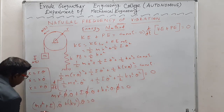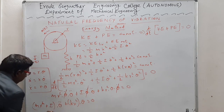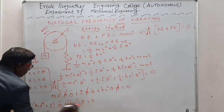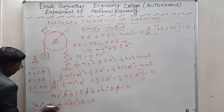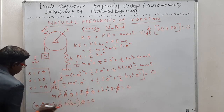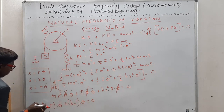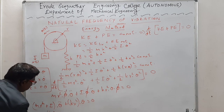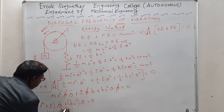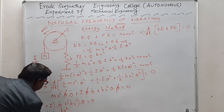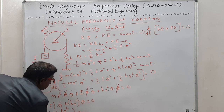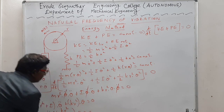This equation can be rewritten by dividing through by the coefficient of θ̈. The whole equation is divided by (mr² + I), so the first term becomes simply θ̈, and the second term becomes [kr²/(I + mr²)]·θ = 0.